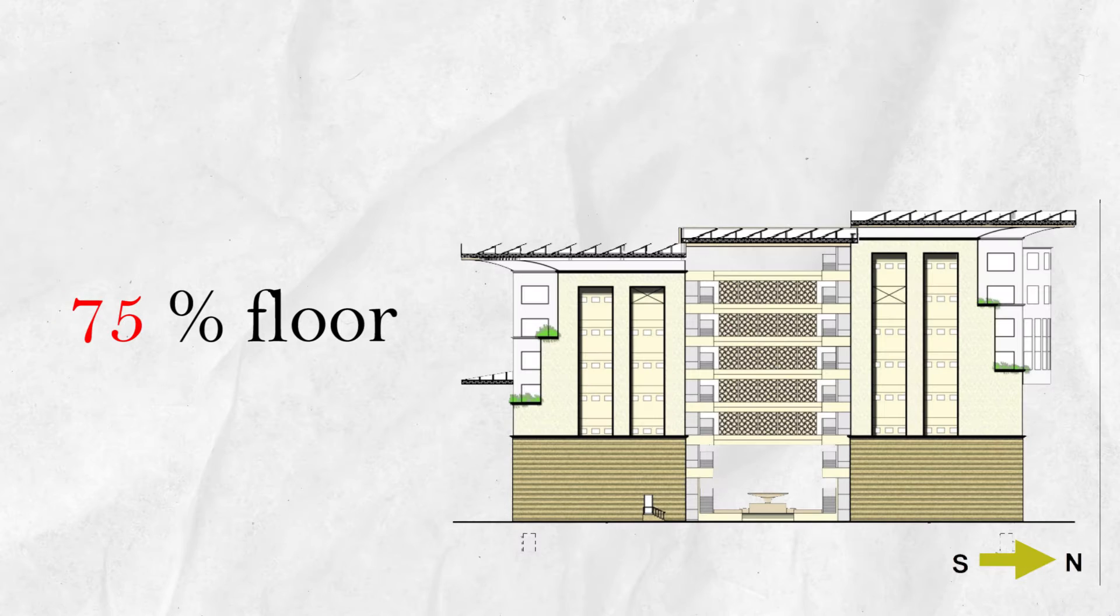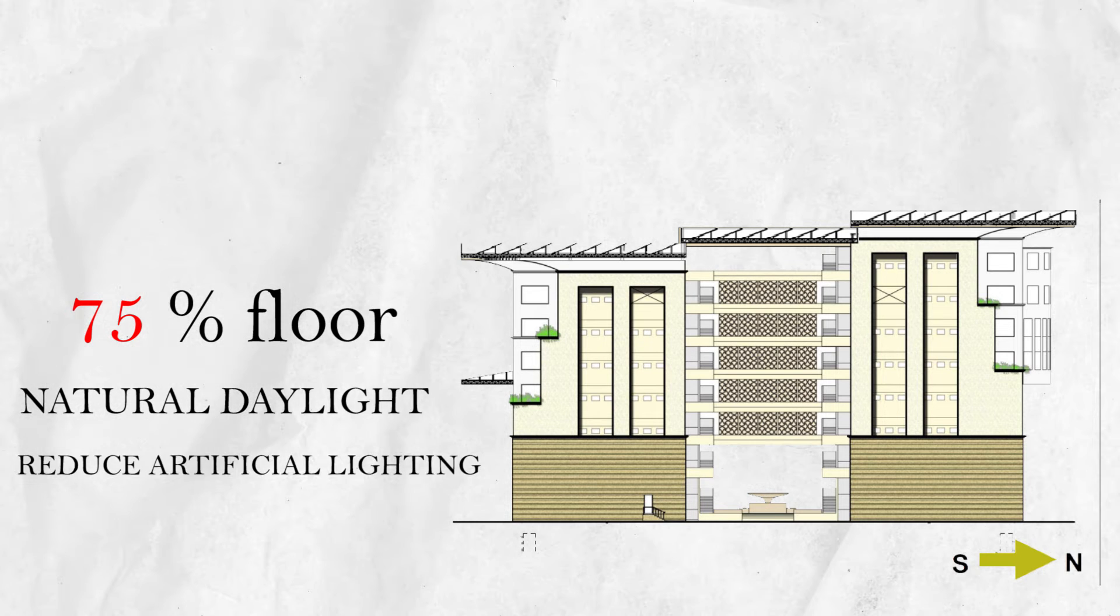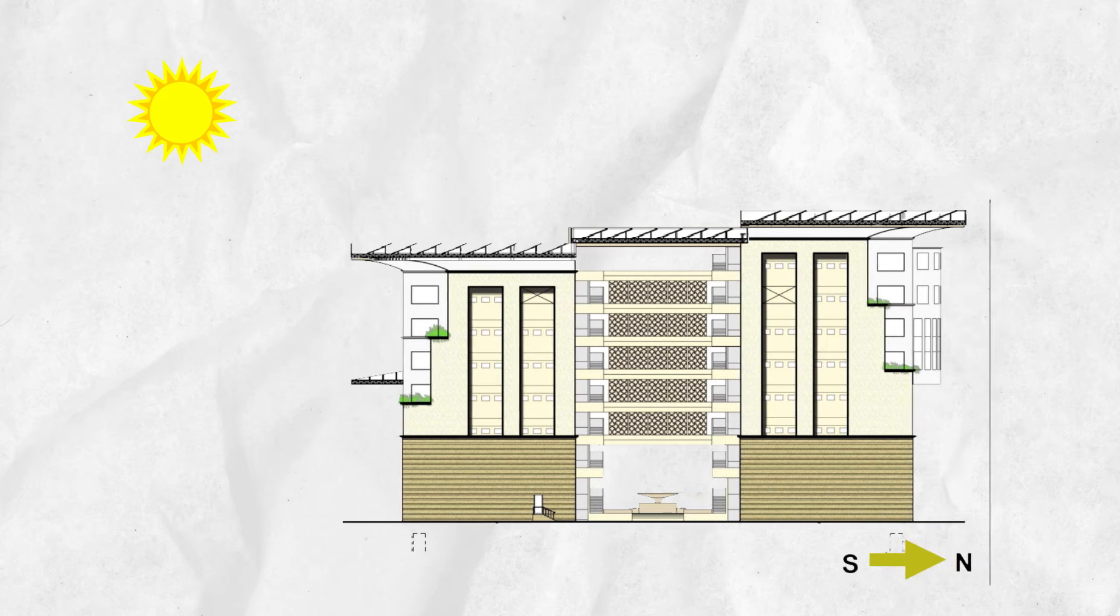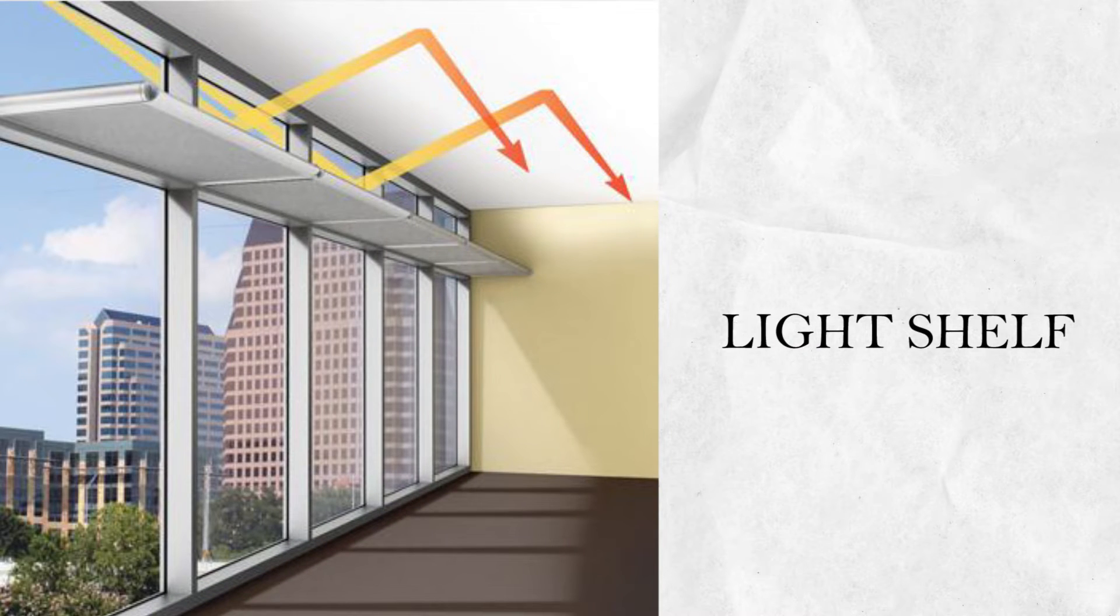75% of the building's floor space is daylit, thus reducing dependence on artificial lighting. The central courtyard works as a light well. Offices receive daylight from the front facade and light well. Also, the light shelves help to reflect more light into the deeper center part of the room.